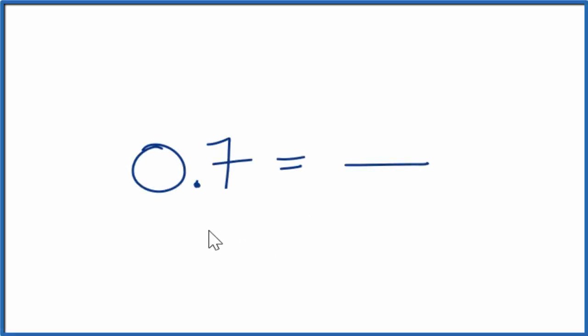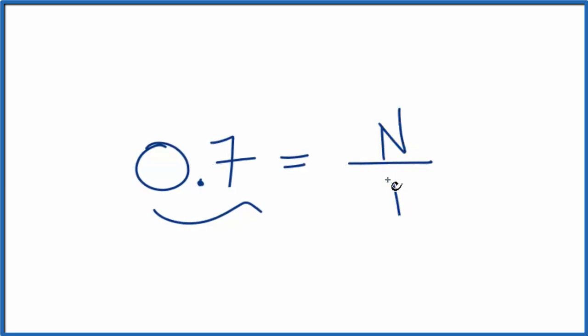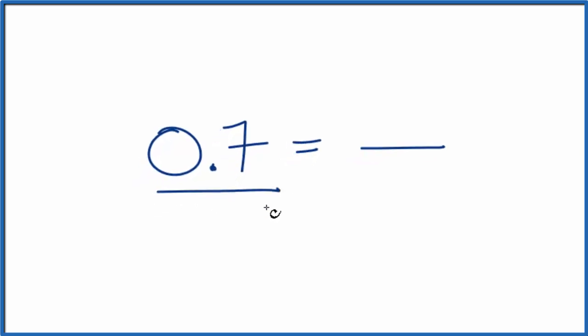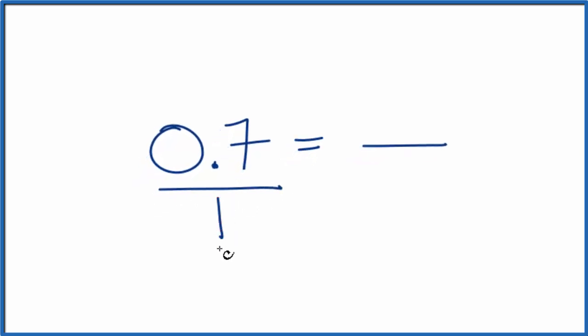Here's how you can convert the decimal 0.7 to a fraction, where we have a numerator over a denominator. First off, we think of 0.7 as 0.7 over 1. It's the same thing. We're just dividing by 1, but now it's starting to look like a fraction.